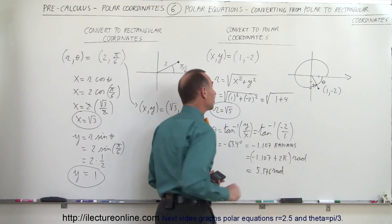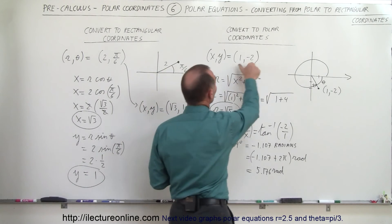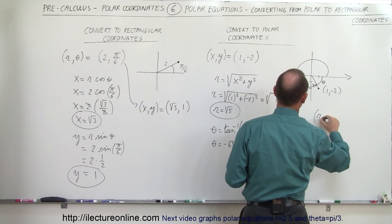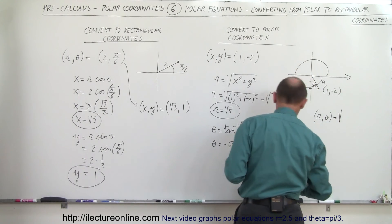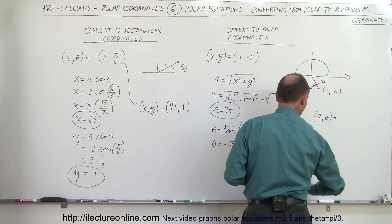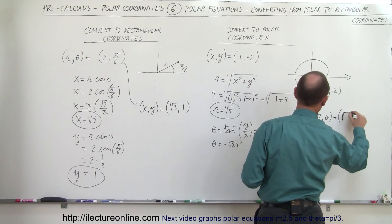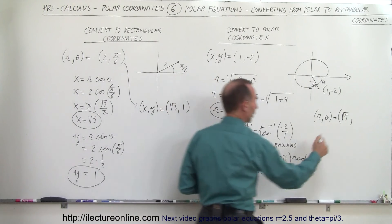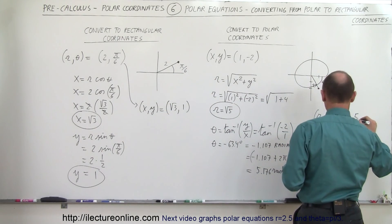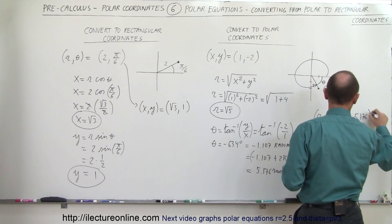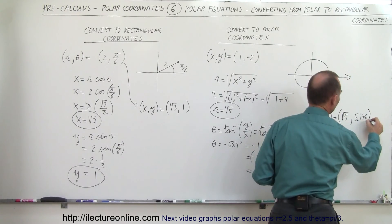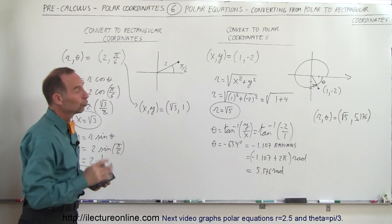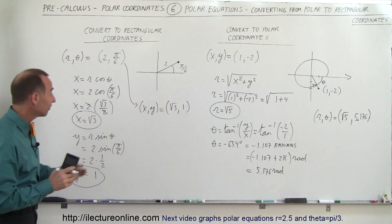So when converting the rectangular coordinates (1, -2) to polar coordinates, we write (R, theta) as the square root of 5 and 5.176 radians. That is the conversion from rectangular to polar coordinates.